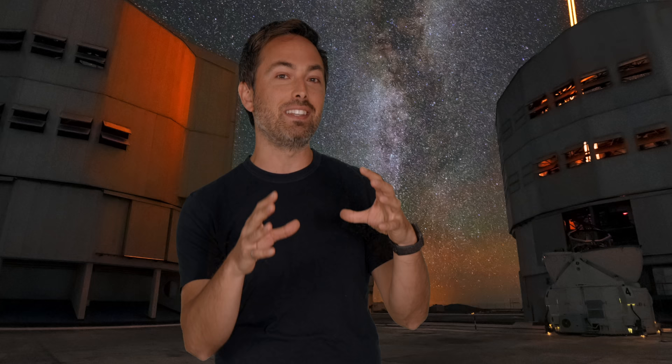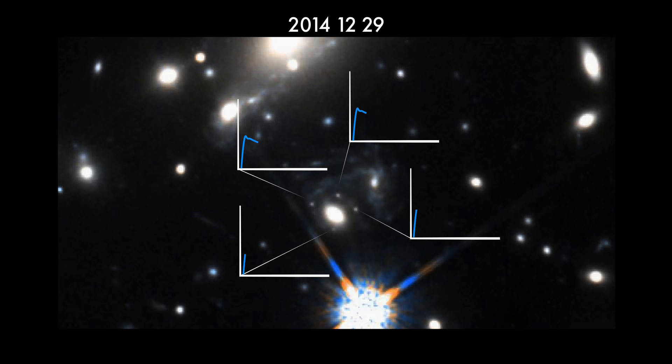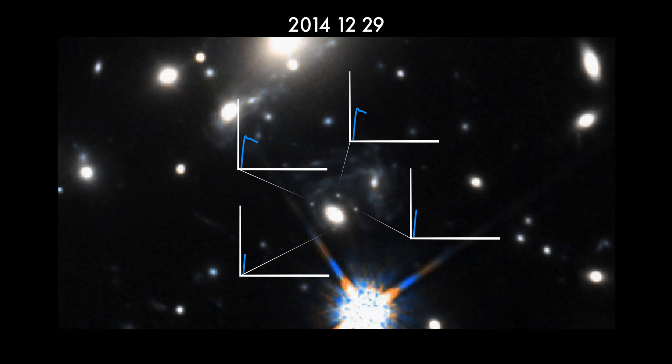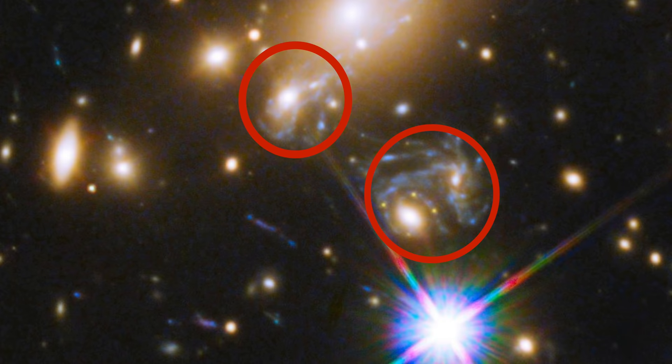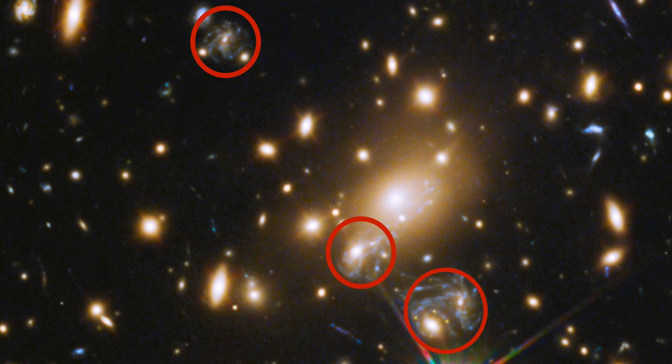In fact, this cluster lenses tens of galaxies. So scientists had been studying and modeling the distribution of matter in the cluster long before the supernova. They asked, if we see these four images of the supernova in one image of its host galaxy, when would the supernova appear in these other two images of the host galaxy?